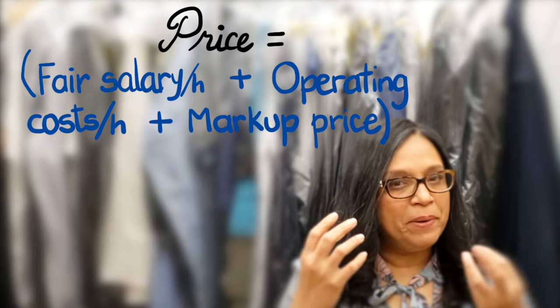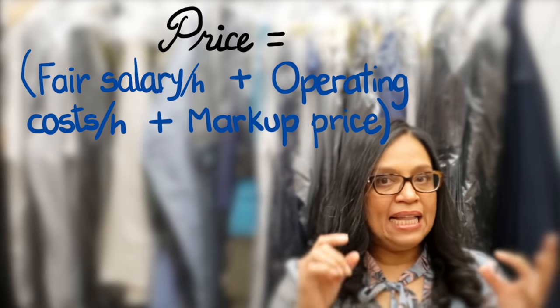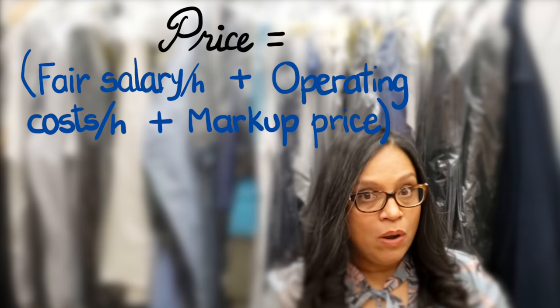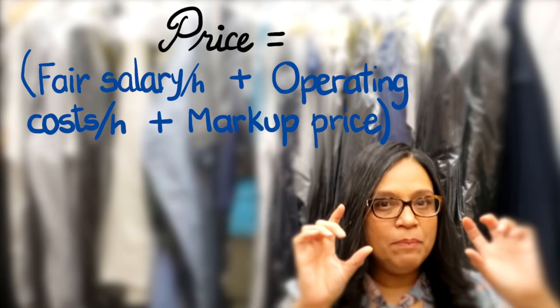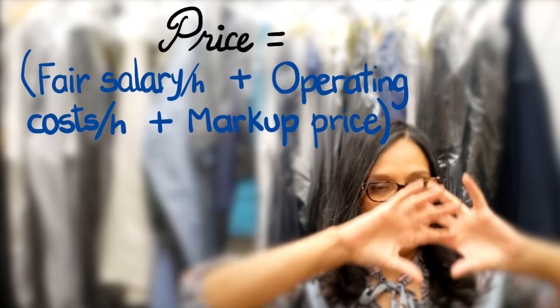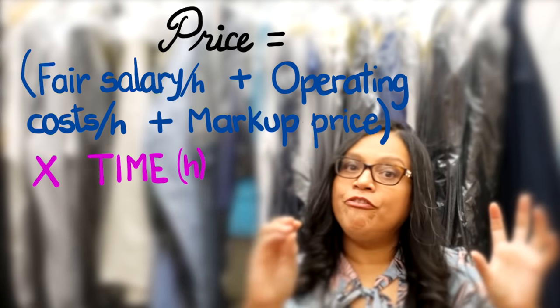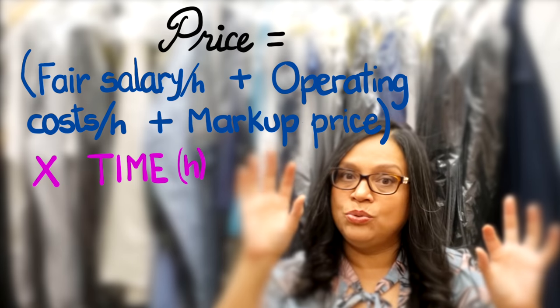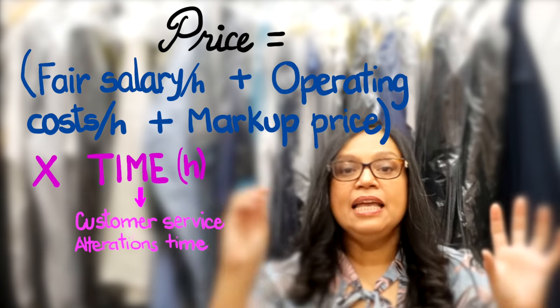Hello everyone, welcome to Downtown Tailoring. In today's video I'm going to answer the most asked question: how do you price your alterations? To price your alteration you need to know the first salary per hour for a tailor, then add the operative cost per hour, and you can add a little bit of market price too. Then all together you multiply by the time it takes to do the alteration and service the customer in hours.